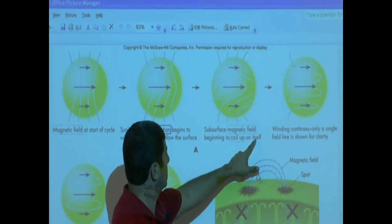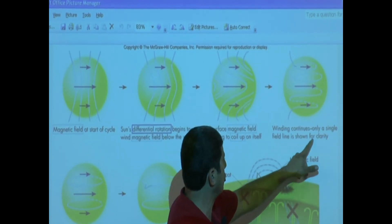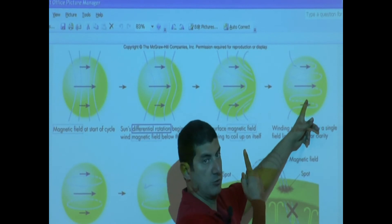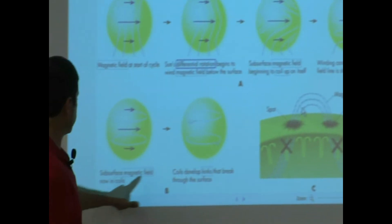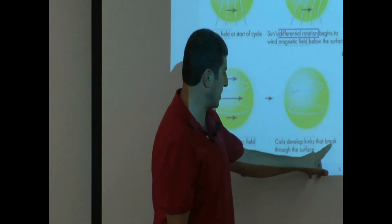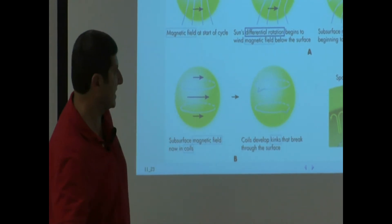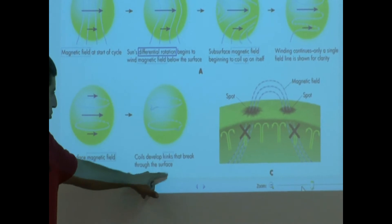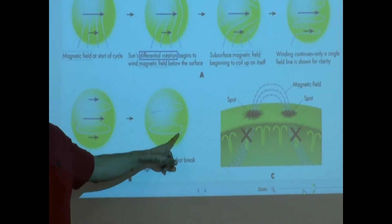It coils up on itself. Winding continues — only a single field line is shown for clarity, so they're showing you only one of them. It basically gets really coiled up. The subsurface magnetic field is now in coils. Those coils develop kinks that break through the surface — that's how a lot of magnetic fields are created. And when those kinks happen, they create sunspots.